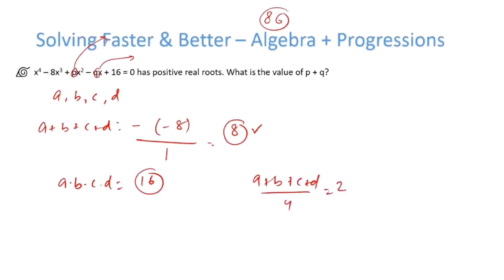a plus b plus c plus d divided by 4 becomes 2, that is the arithmetic mean, and the geometric mean is 16 to the power 1/4, which is also 2. We know that AM ≥ GM, but in this case AM = GM. This tells us that all the roots must be equal.